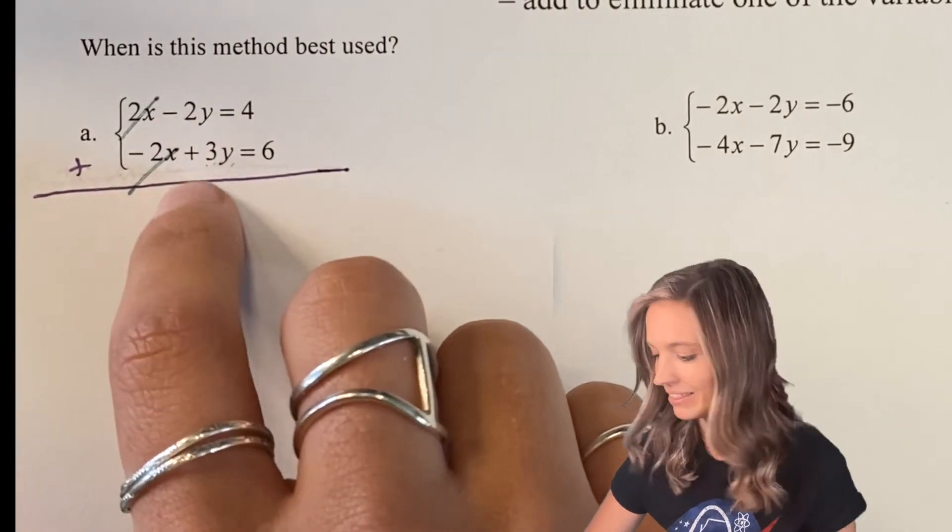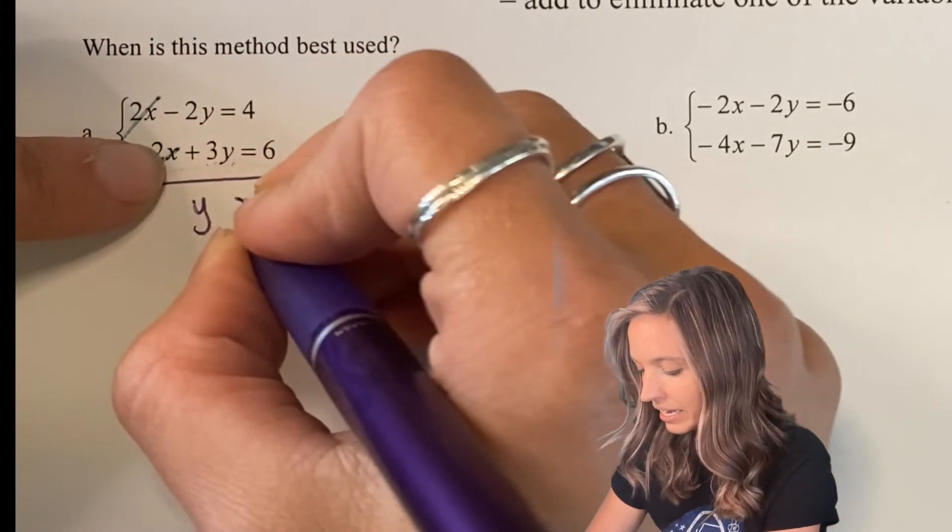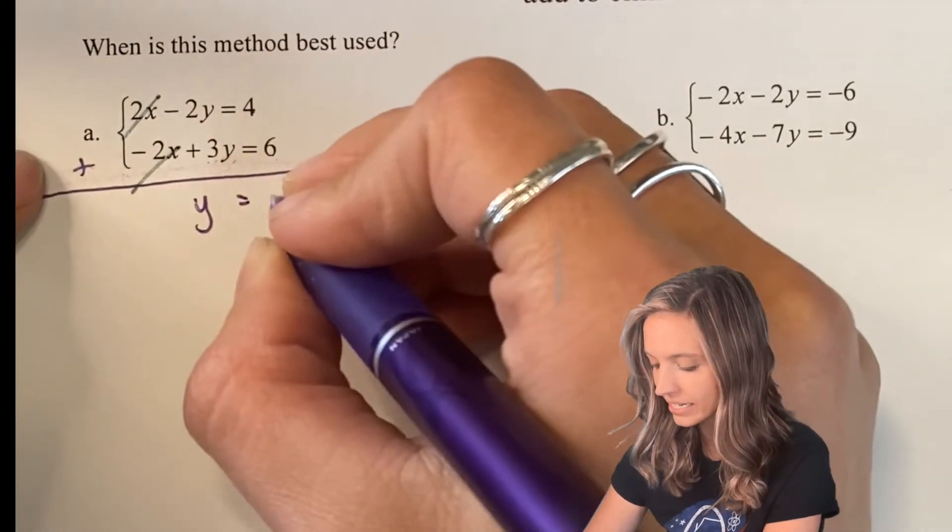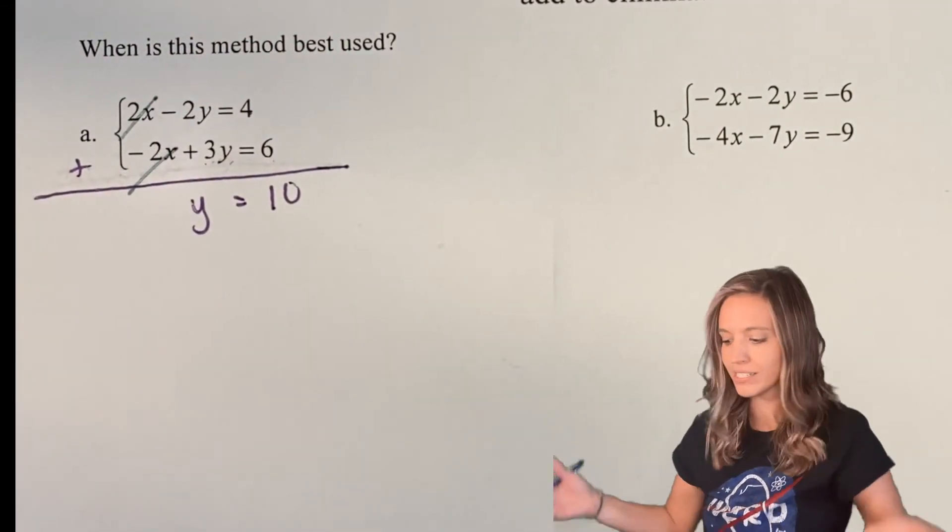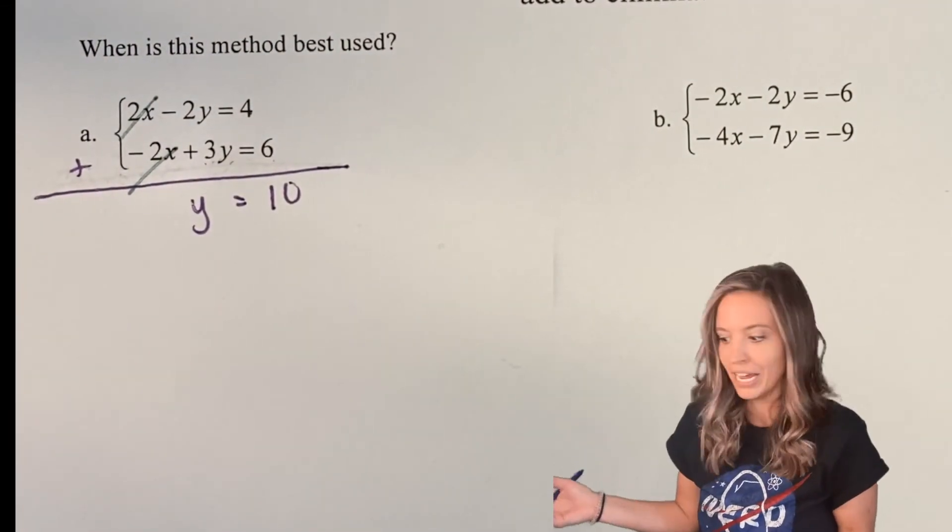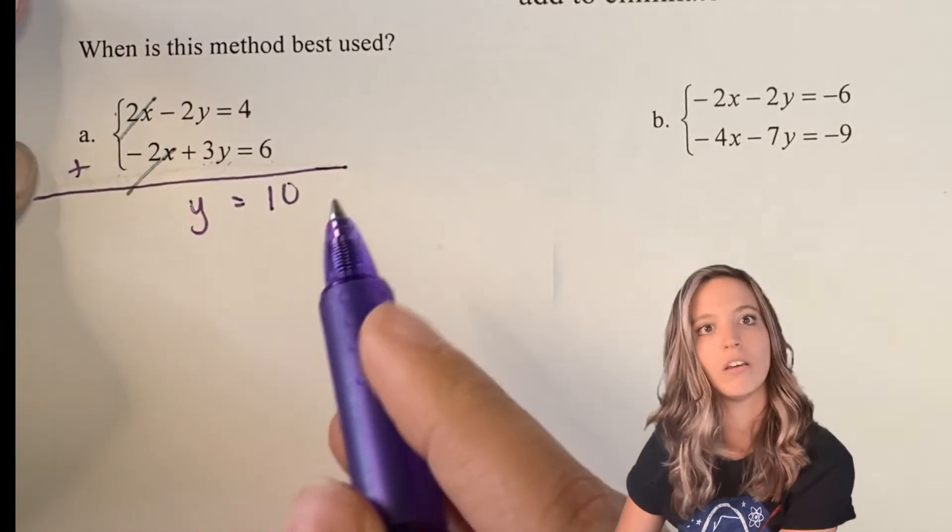If I add straight down, I have 2x + -2x. Those add straight out. I eliminated them. So now I have -2y + 3y. Well, that's just going to be 1y = 4 + 6 is 10. Oh my gosh, I already have one of my solutions. That's crazy. I kind of like elimination.